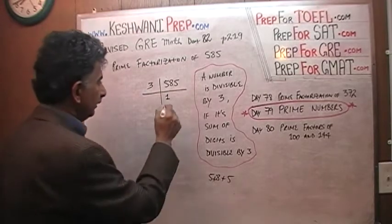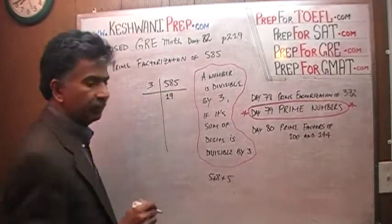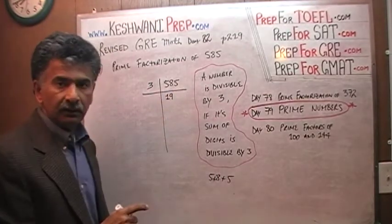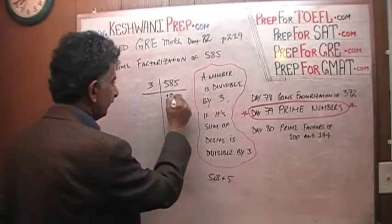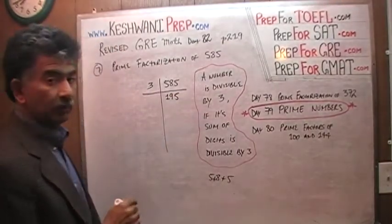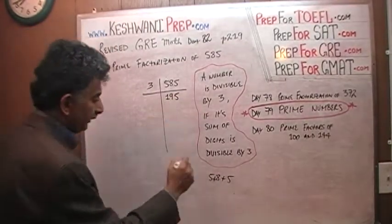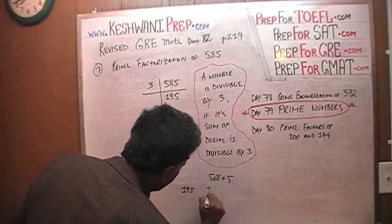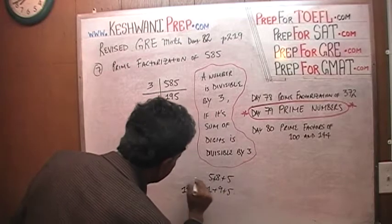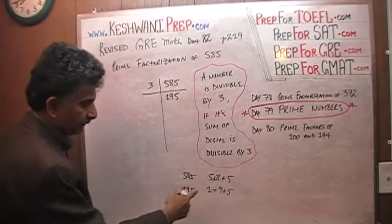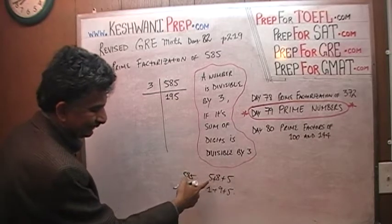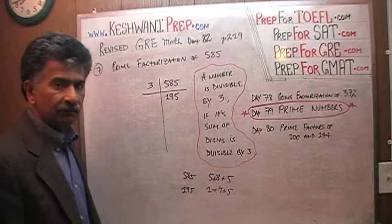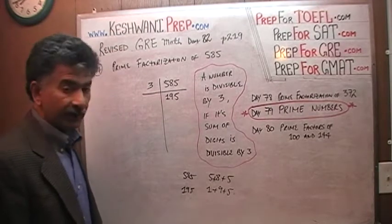How many 3's in 28? There are nine 3's in 28, because 9 times 3 is 27. The remaining 1 goes and joins this guy, it becomes 15. How many 5's in 15? There are five 5's in 15. We can go one more time with 3. 585 is divisible by 3 because the sum of the digits was 18. Here, 1 plus 9 is 10, plus 5 is 15. 15 can be divided by 3, so 195 can be divided by 3.